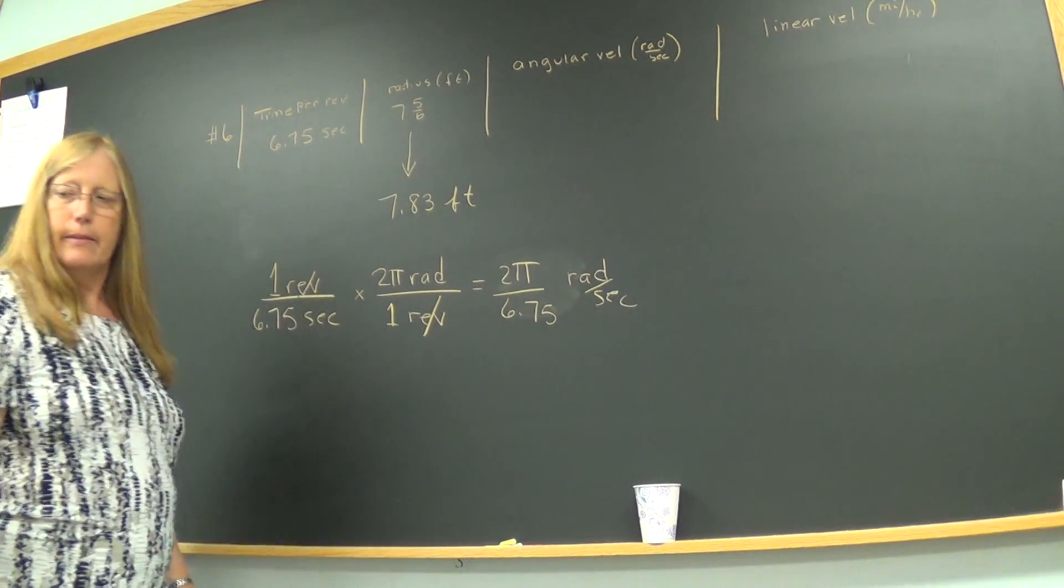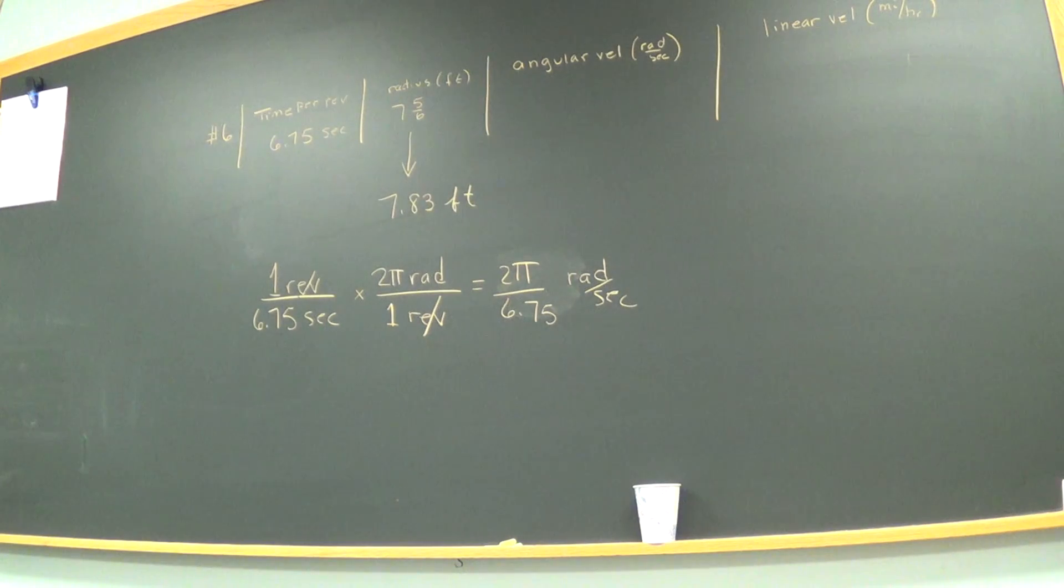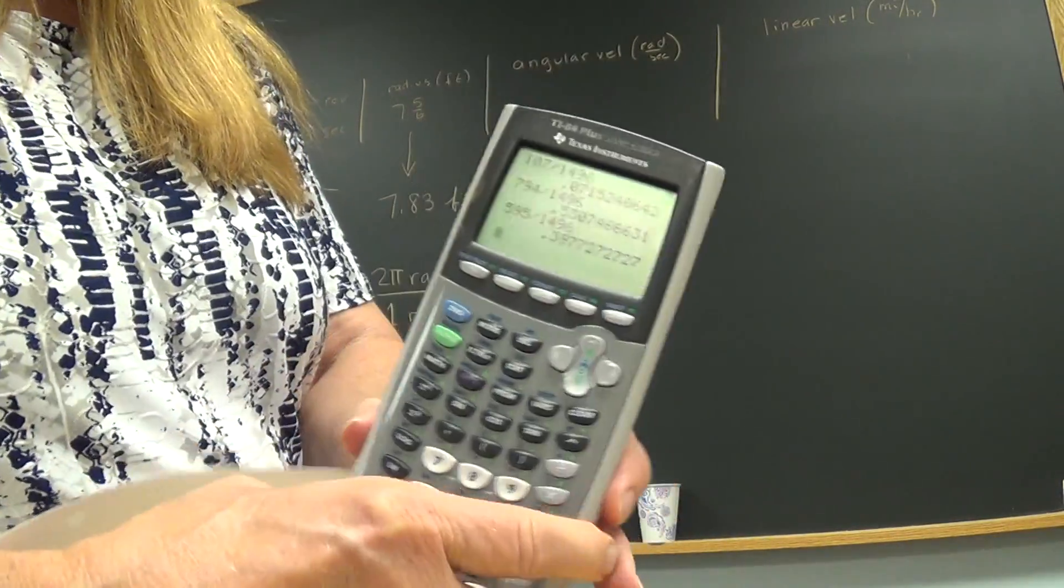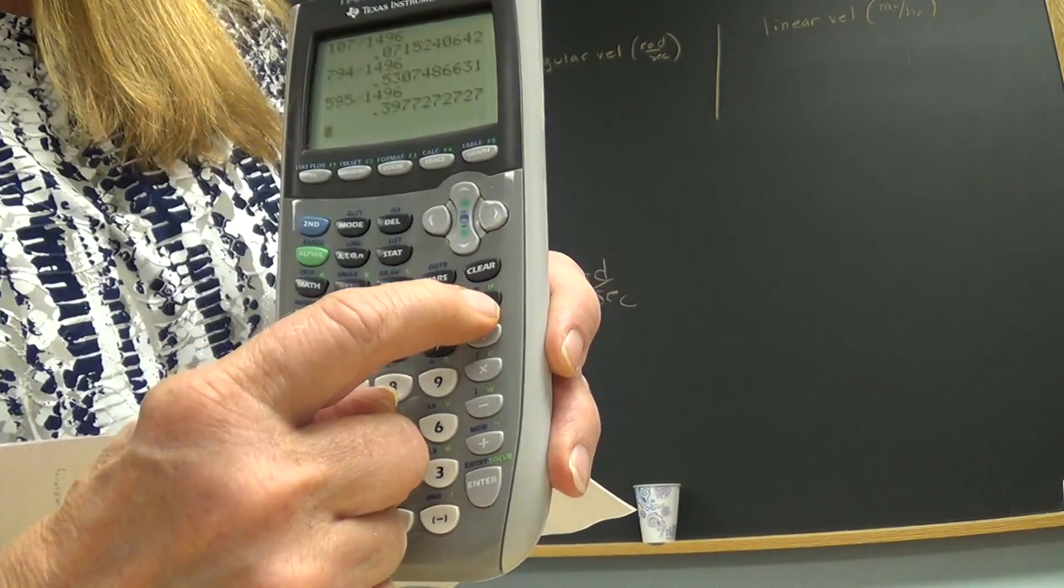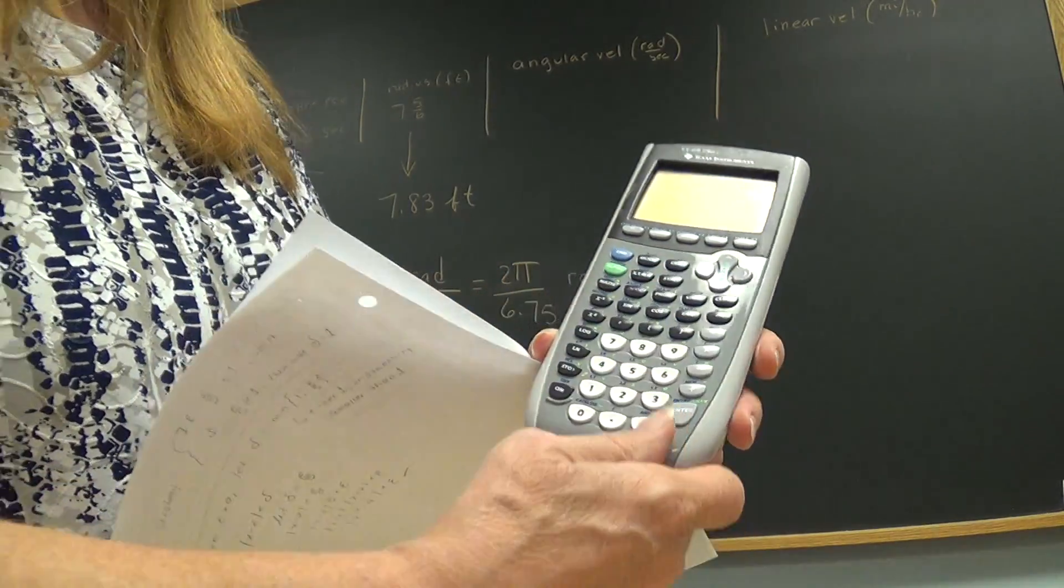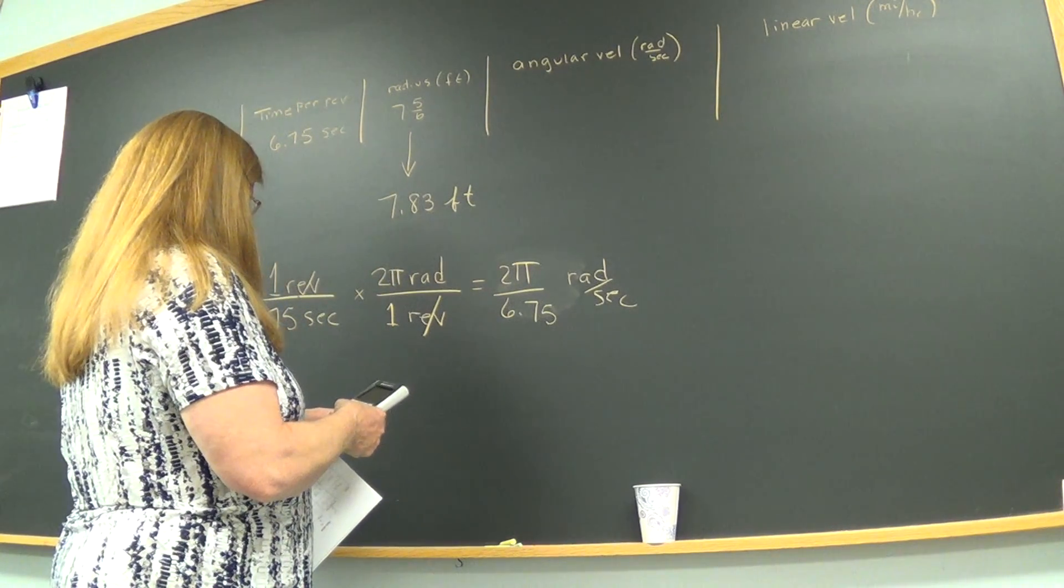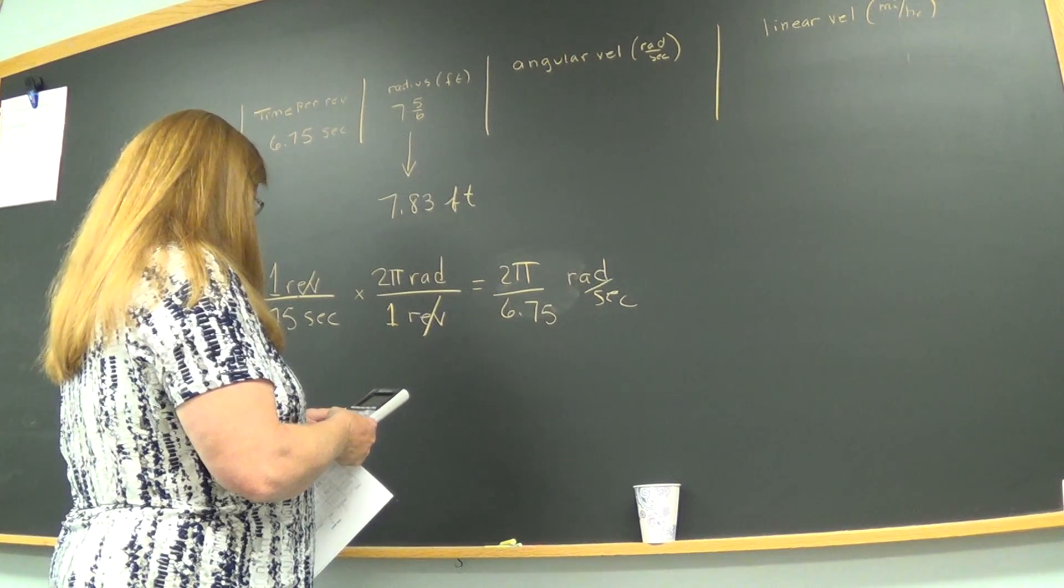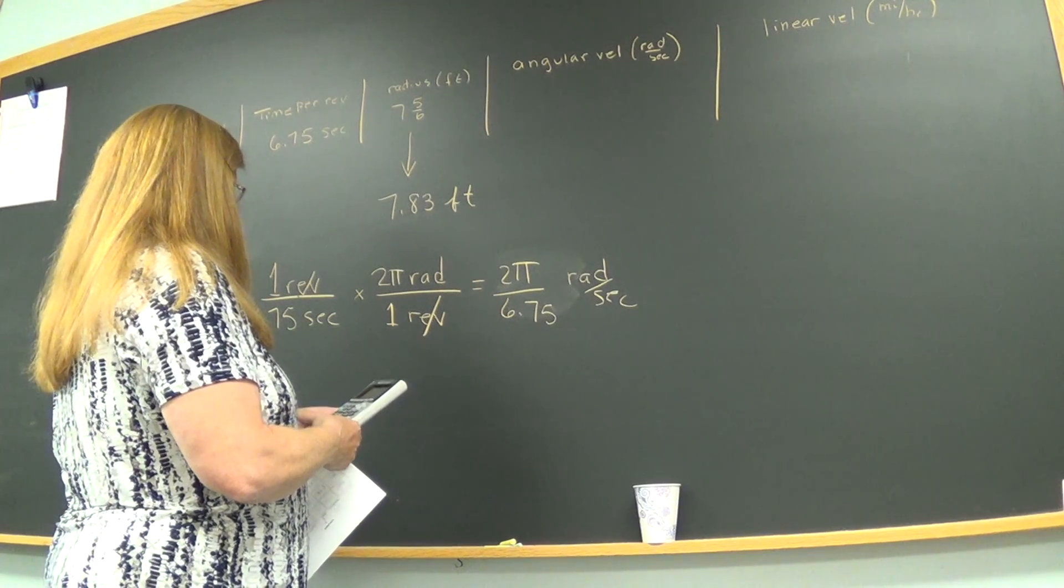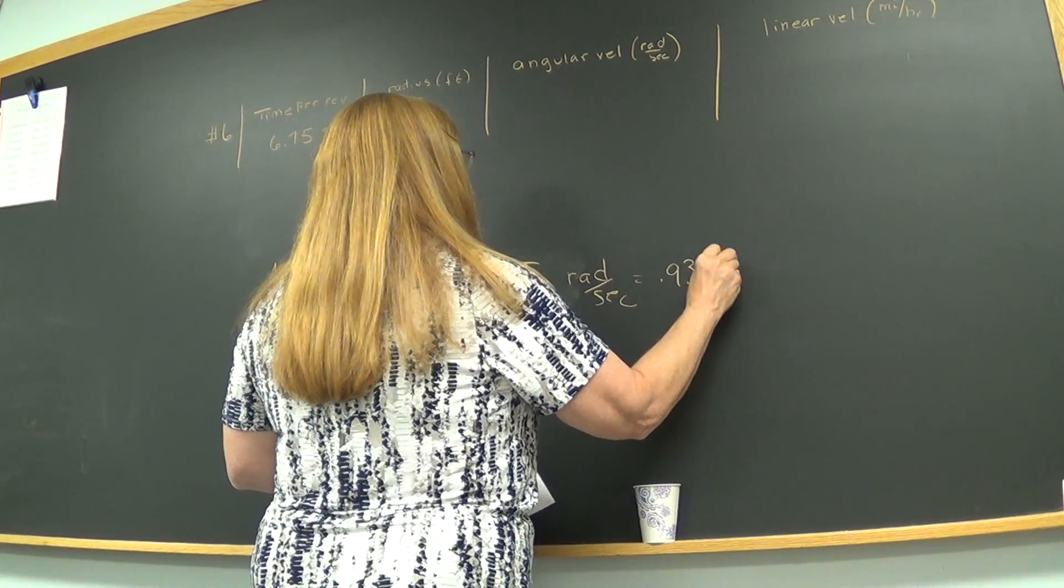And when I tap 2π divided by 6.75, I'm going to check that on. Let's see. Do you see where π is on here? The π value is right here. It's a second function. It's above the arrow up button there. So we have 2π divide 6.75. And that gives me 0.93, 0.93 radians per second.